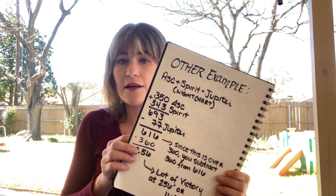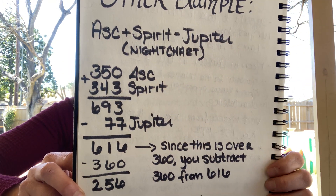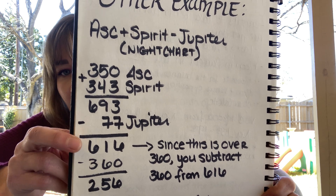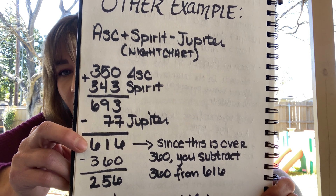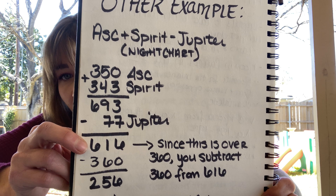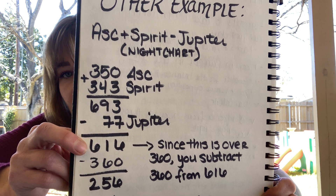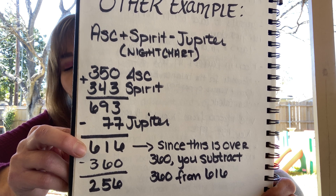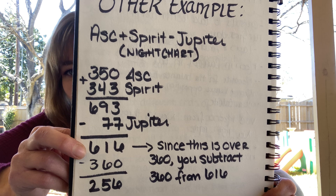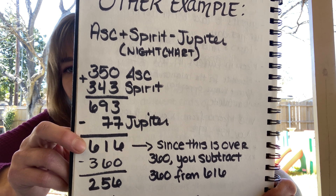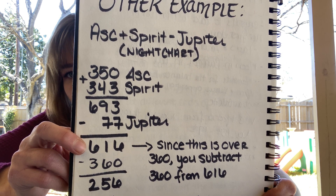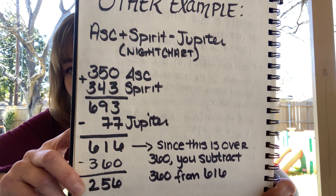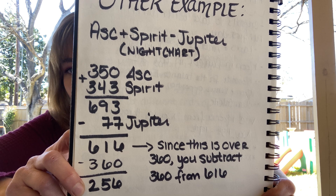This example is for a night chart. Sometimes when you calculate these, you might come out with a number that is bigger than 360. Like here with this example, you come out with 616 — when you add the ascendant plus spirit together and then subtract Jupiter. So when that happens, what you do is take the number that you get, which in this case is 616, and subtract 360 from it. And you end up with another number — in this case, 256.